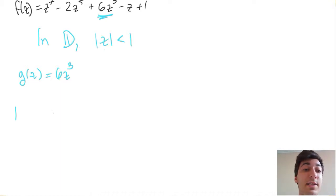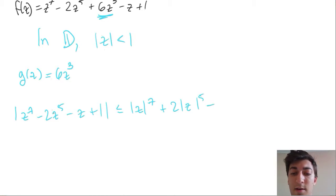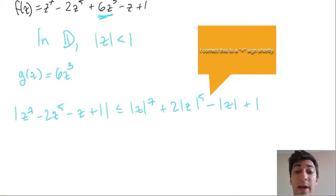So if we write out the difference, it looks like this: z⁷ - 2z⁵, the 6z³ term goes away because we subtract that off, minus z plus 1. Okay, and we can do a really kind of crude estimate here and use the triangle inequality, which is again a pretty poor estimate, but it will be sufficient for our purposes. And by using the triangle inequality, we get the following: |z⁷| + 2|z⁵| + |z| + 1. Okay, fair enough.